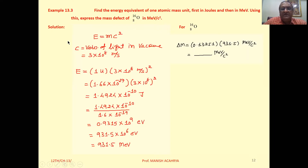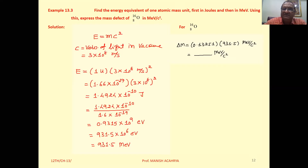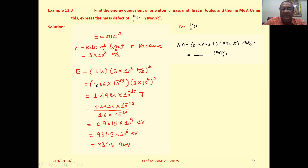We already discussed Einstein's equation, the mass-energy relationship E = mc², where C is the velocity of light in vacuum. Now, if one u mass is converted into energy, how much energy will be obtained?